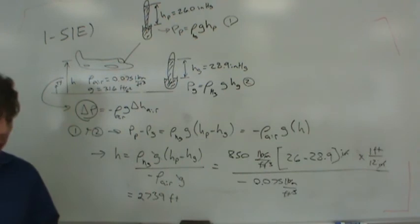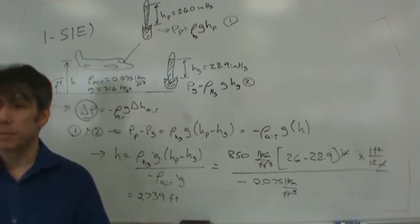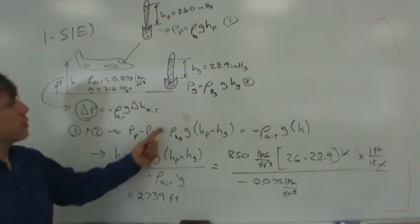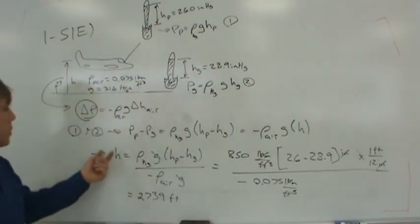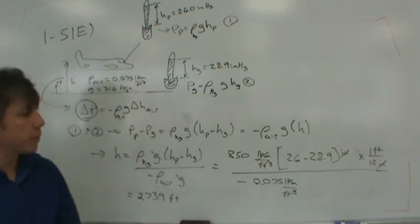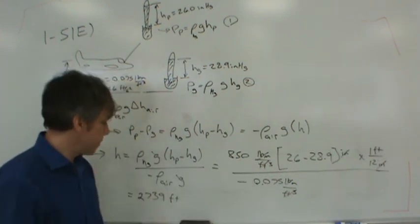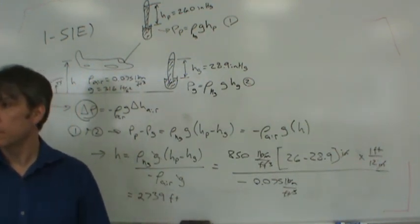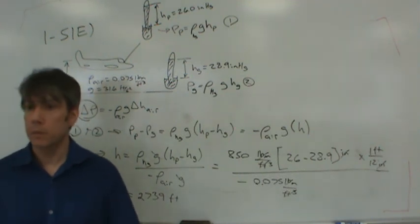The textbook gives the answer as 2,737 feet — a difference of only 2 feet. This discrepancy likely comes from two sources: the textbook probably converted inches of mercury to PSIA using the standard conversion factor rather than the barometer equation directly, and a slightly different density of mercury may have been used. Using a density of 846 pounds mass per cubic foot gives a result closer to their answer, which confirms that density choice is the main source of the difference.